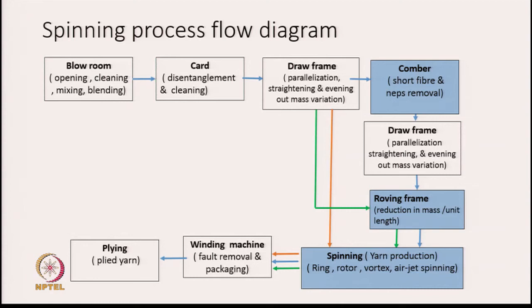If we look at the diagram, most of you will know that the first machine in the spinning sequence is the blow room, where we generally open and clean the material. We can also mix or blend two different types of material in the blow room. Then from blow room, we go to the next machine called the card. The process is called carding, and here we do the cleaning job with the carding machine.